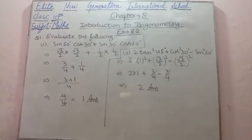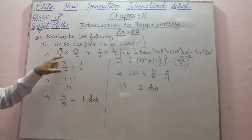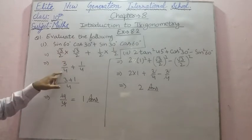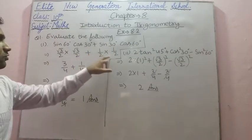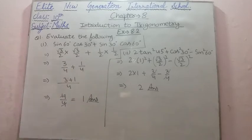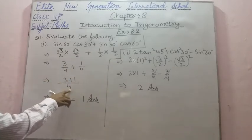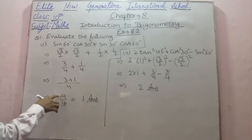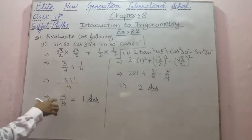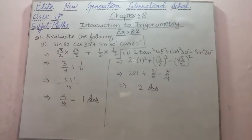Solving: √3 × √3 = 3, and 2 × 2 = 4, so the first term is 3/4. Then 1 × 1 = 1 and 2 × 2 = 4, so the second term is 1/4. Taking LCM = 4: we get (3 + 1)/4 = 4/4 = 1. So the answer is 1.